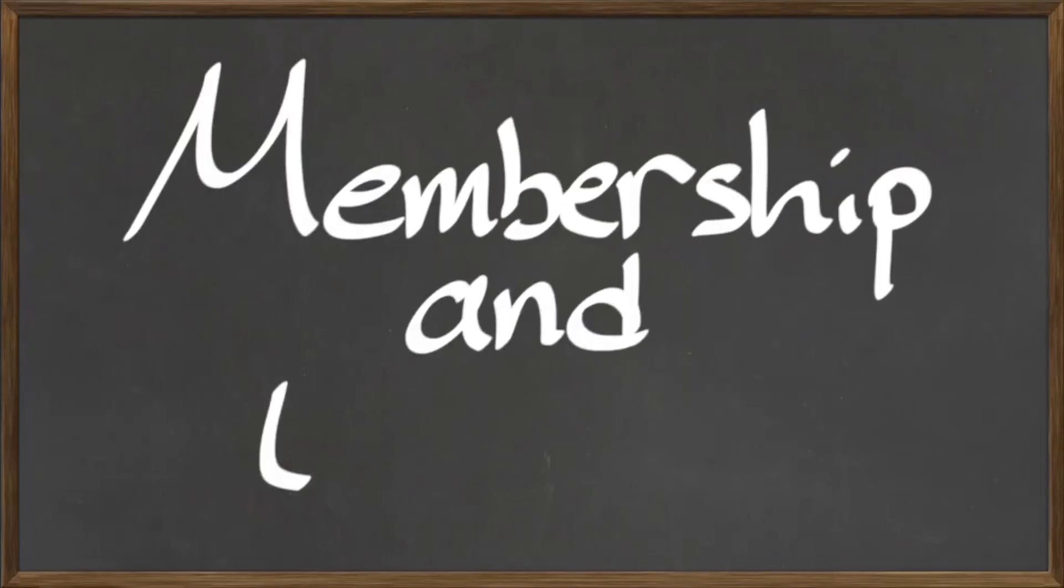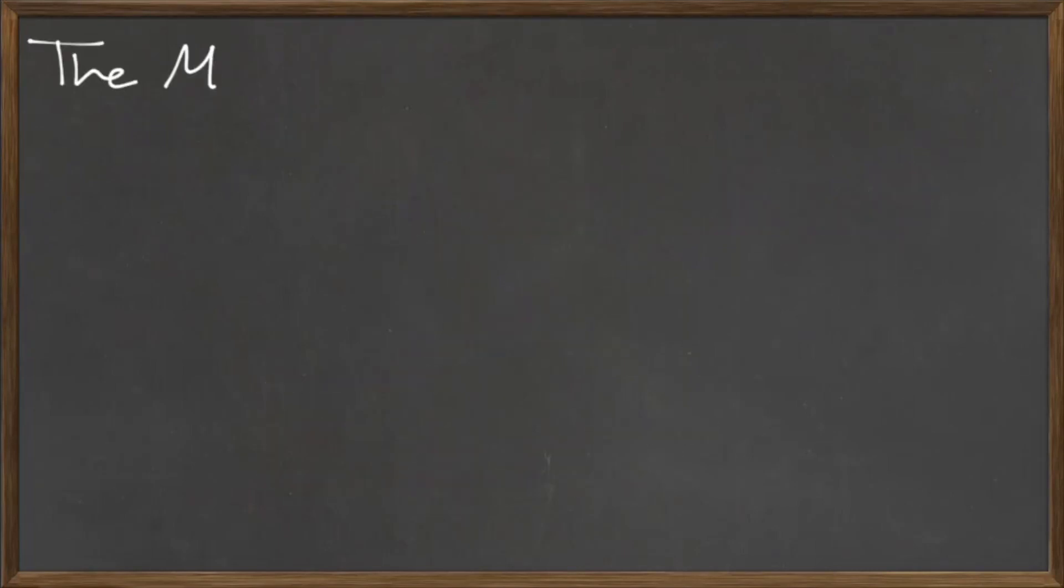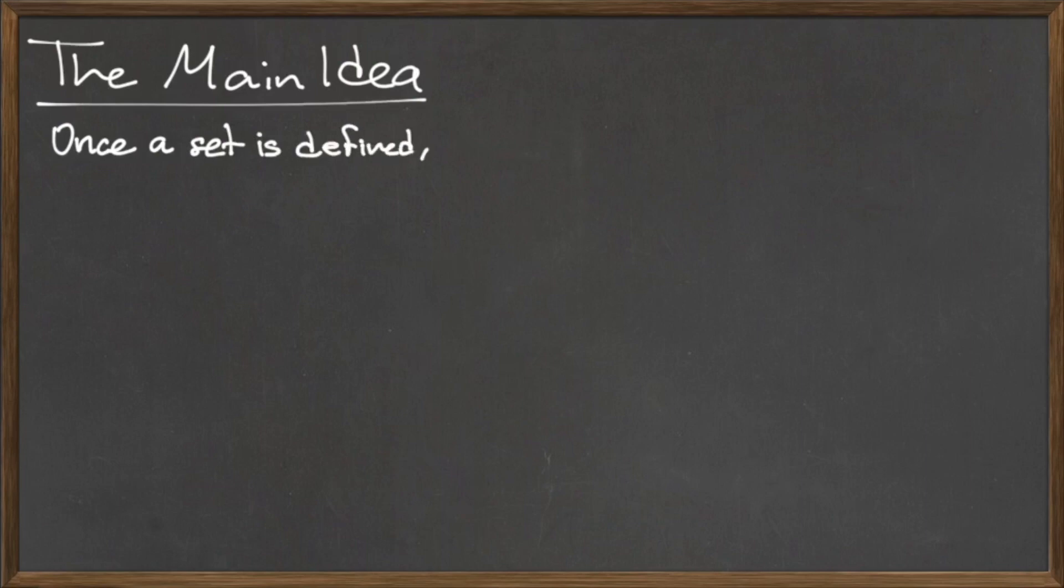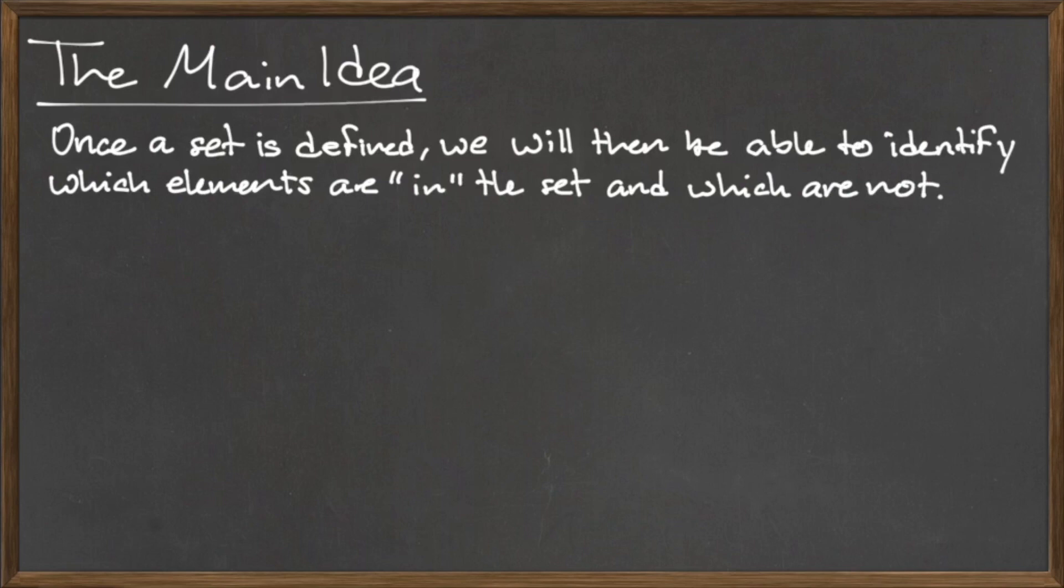In this video, we will examine set membership and equality. Once we have described a set, the next logical question to ask is which objects should be included in the set and which should be excluded. Remember that for a well-defined set, there should be no ambiguity or confusion as to which elements are included in the set and which are not.